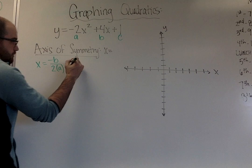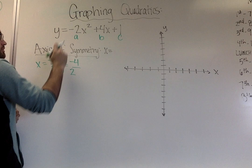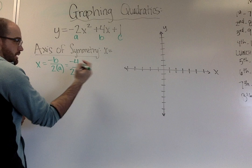I have a positive 4, so opposite b says to make it a negative 4. On the bottom I have 2 times my a value, my a value here happens to be a negative 2, so I bring down negative 2.